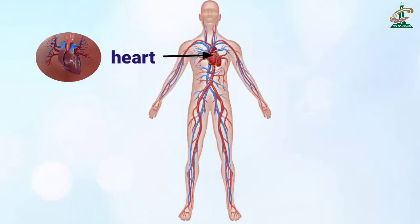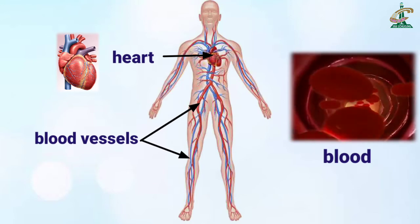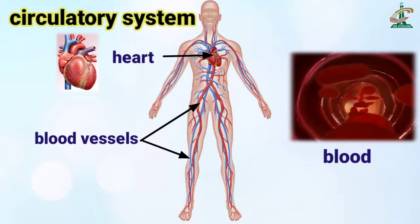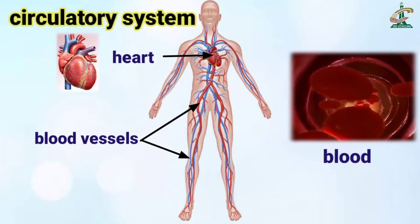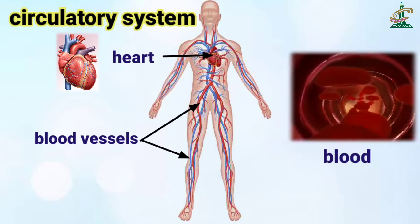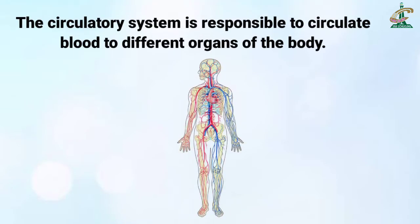Our heart, blood, and blood vessels together form our circulatory system. Blood vessels का पूरा नेटवर्क होता है हमारी body में, and blood हमारा circulatory system बनाते हैं. Our circulatory system is responsible to circulate blood to different organs of the body.